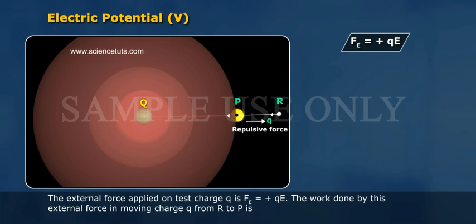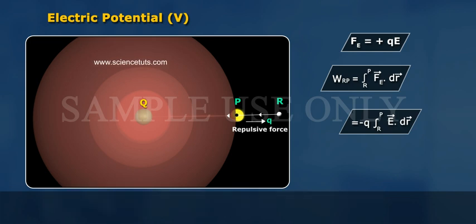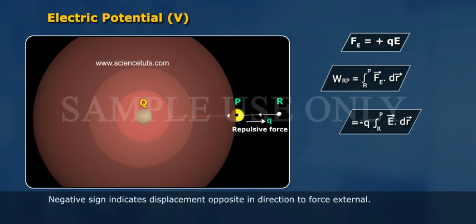The work done by this external force in moving charge q from R to P is WRP equals integration from R to P F bar E dot D R bar equals minus q integration from R to P E bar dot D R bar. Negative sign indicates displacement opposite in direction to force external.